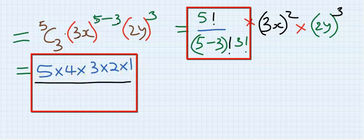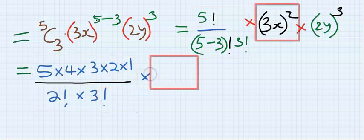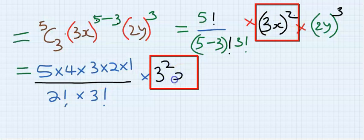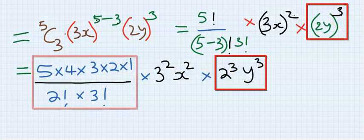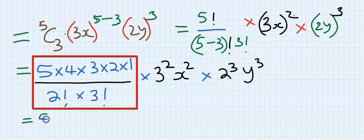The denominator is 2 factorial multiplied by 3 factorial. This gives 3 to the power of 2 times x to the power of 2, times 2 to the power of 3 times y to the power of 3.